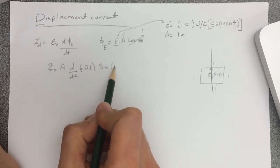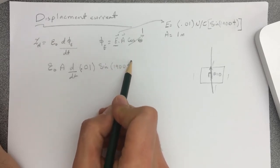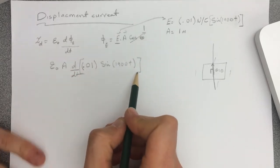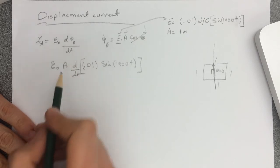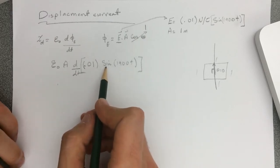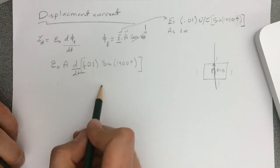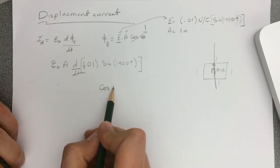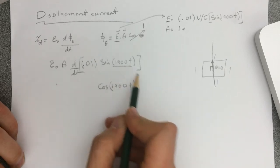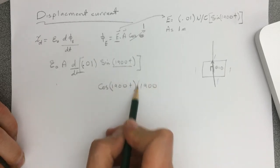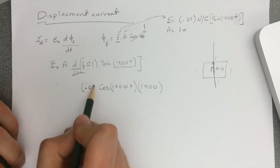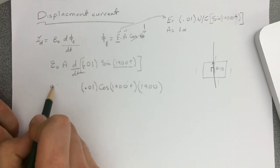Alright, so let's just differentiate this one. The derivative of this one is the cosine of 1900t and then derivative of the outside through the inside which is 1900. So 0.01 and the epsilon here is 8.85 times 10 to the negative 12.